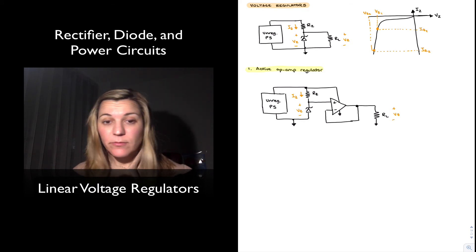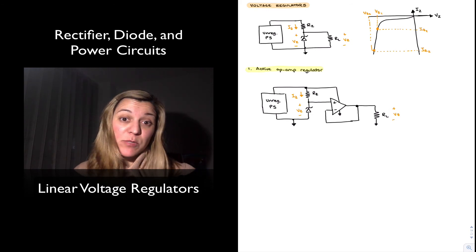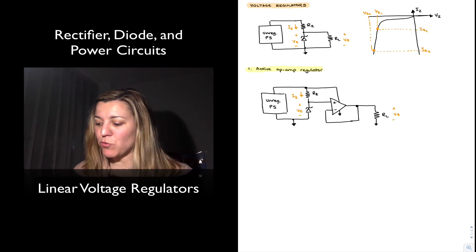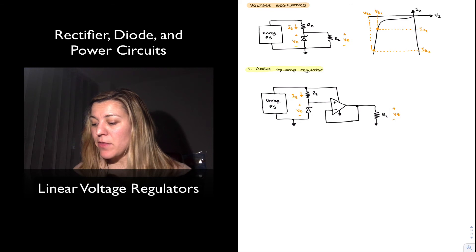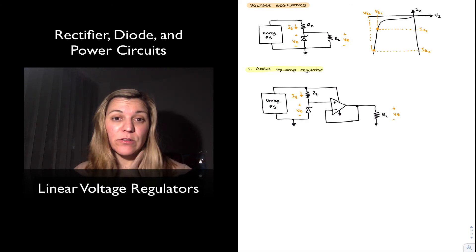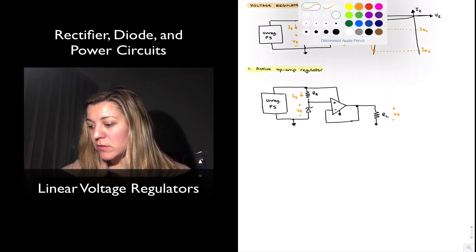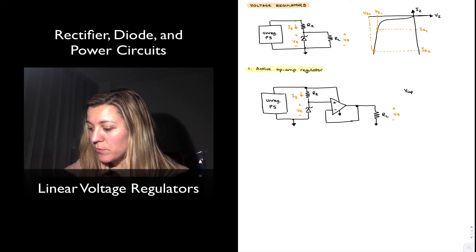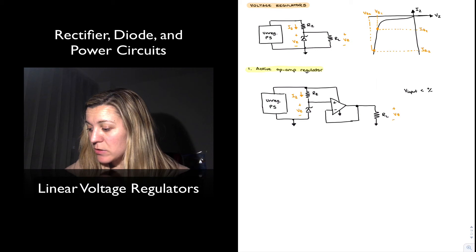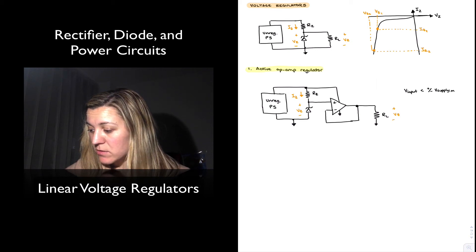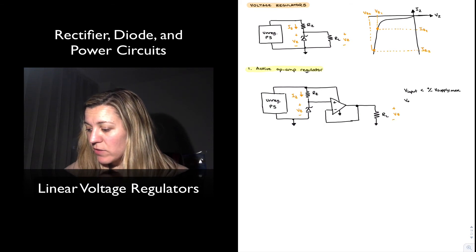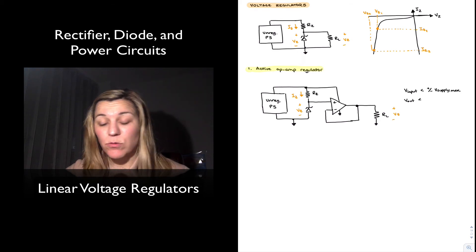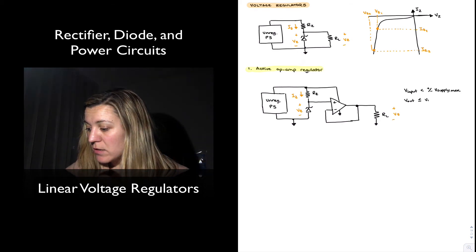A couple of points to notice is that for one thing our maximum output voltage cannot exceed the maximum power supplies for the op-amp, or rather the maximum input voltage cannot exceed the maximum power supply for the op-amp. The output voltage needs to be below that unregulated power supply by a certain amount to make sure that the transistor doesn't go into saturation. Typical specifications will be for this circuit that we want our V input to be less than the plus/minus V supply max for the op-amp, and then we want our V out to be less than or equal to V in minus two volts.